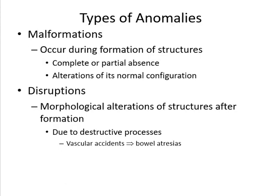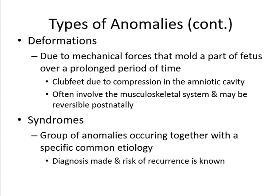The types of anomalies include malformation, which occurs during formation of a structure and may involve complete or partial absence of organs or alteration of normal configuration. Disruption is a morphological alteration of a structure after formation, due to a destructive process — for example, a vascular accident may lead to bowel atresia. Deformations occur due to mechanical forces that mold a part of the fetus over a prolonged period; for example, clubfoot due to compression in the amniotic cavity. These often involve the musculoskeletal system and may be reversible postnatally.